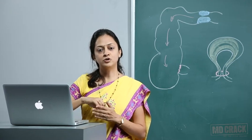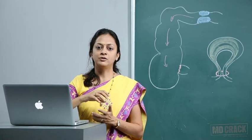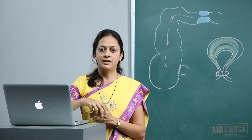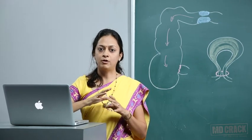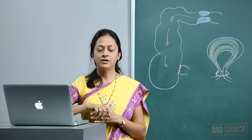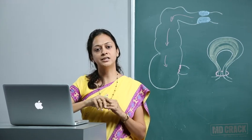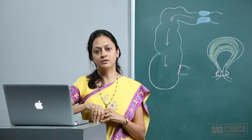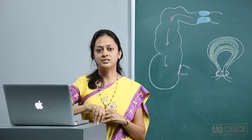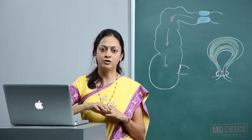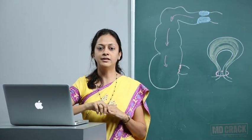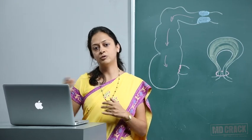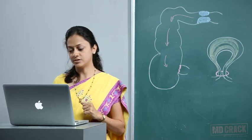If the bowel is not showing all these three signs, you can give 100% oxygen and keep a hot mop on the bowel. Wait for these three things to appear. If they don't appear, then the viability is not there and you can go forward for resection and then anastomosis.